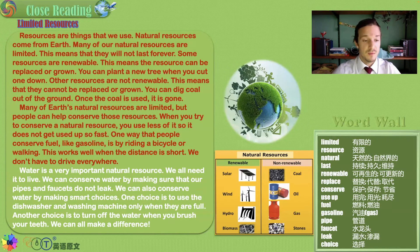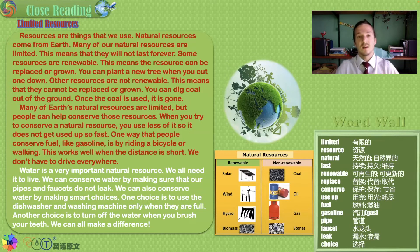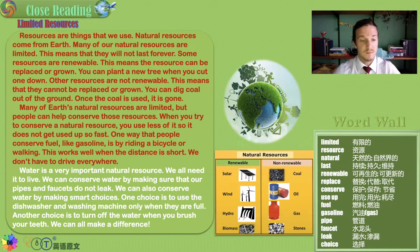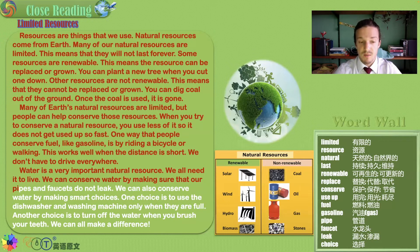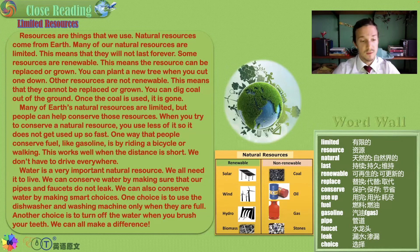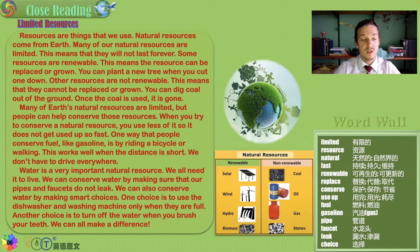It's a give and take — you take more now, you have less for the future; you use less now, you have more later. Water is possibly the most important natural resource. We all need water to live. We can conserve water by making sure our pipes and faucets do not leak. We can also conserve water by making smart choices — using the dishwasher and washing machine only when they are full, and turning off the water when you brush your teeth.